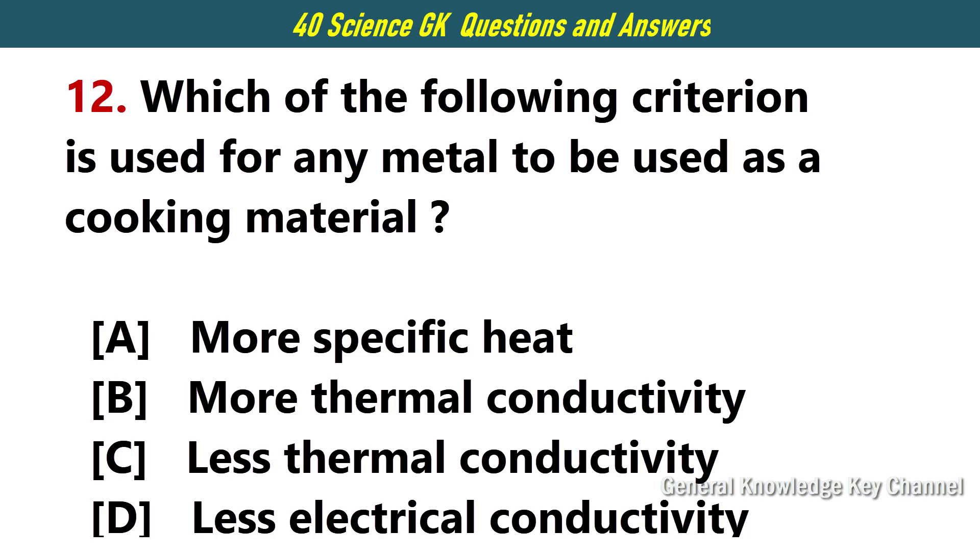Which of the following criteria is used for any metal to be used as a cooking material? Answer C. Less thermal conductivity.